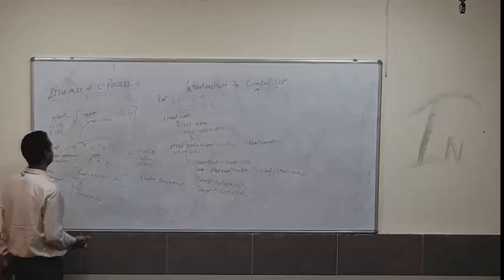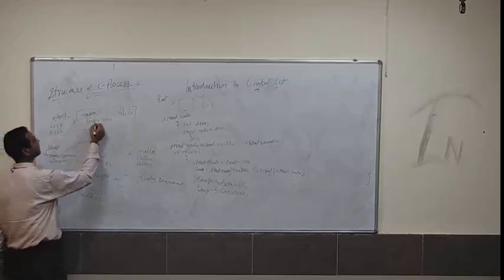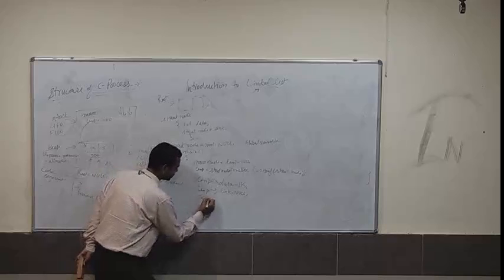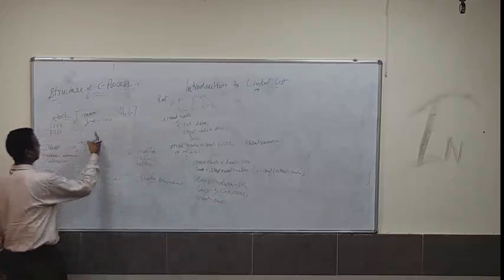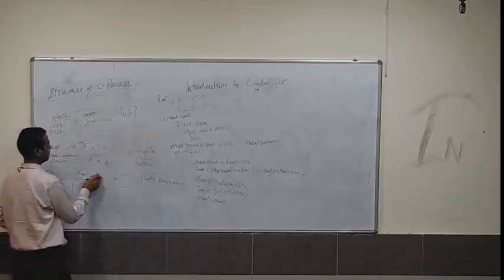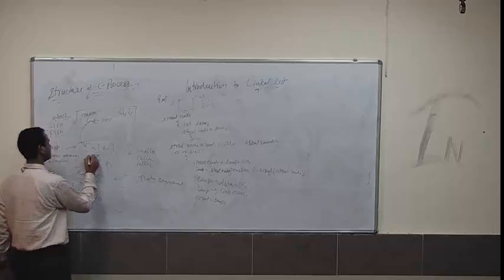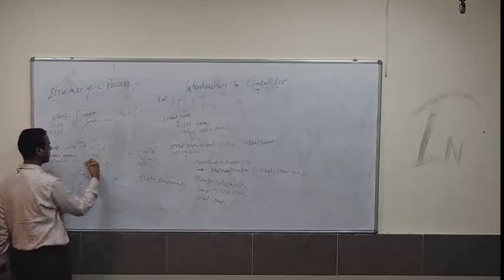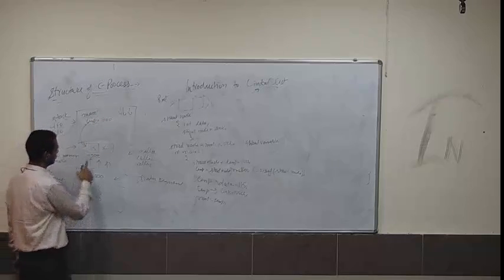Now my duty is: I have defined root in global variable. Just update the value of root with the value of temp. So root is equal to temp. Just update the value of root with temp. So temp is containing the address of the node in memory, and root is also now containing that address 1000.